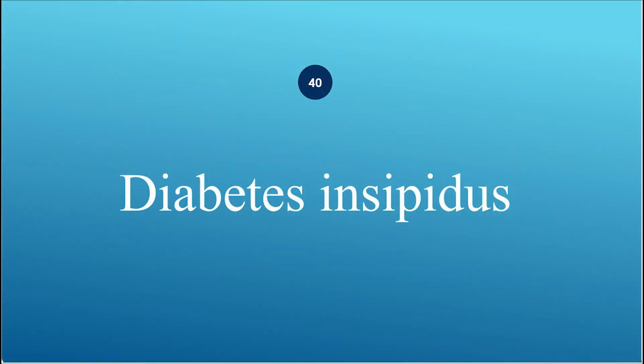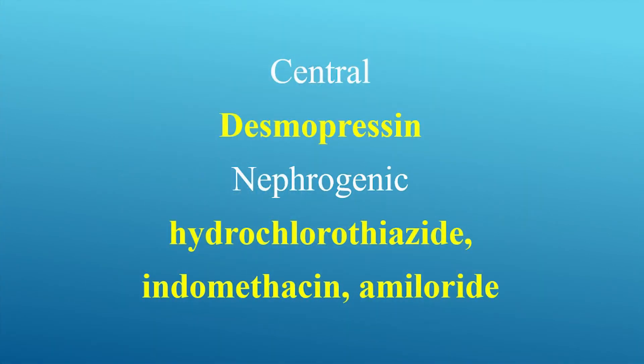Diabetes insipidus — what is the treatment? For central DI, use desmopressin. For nephrogenic DI, use hydrochlorothiazide, indomethacin, or amiloride.